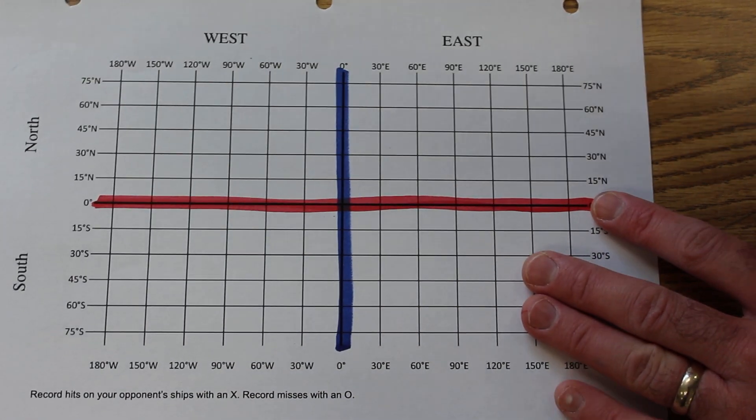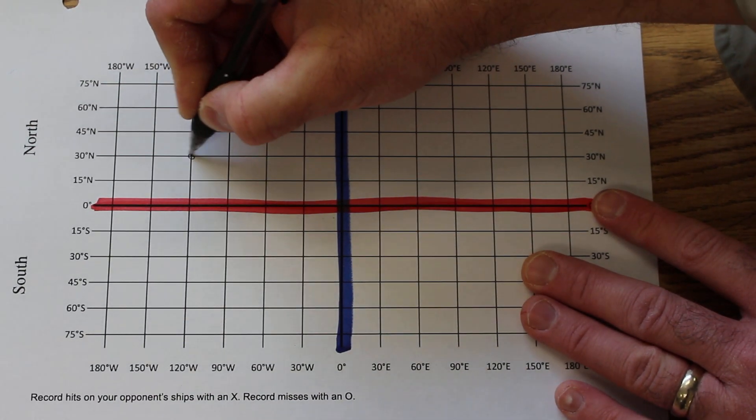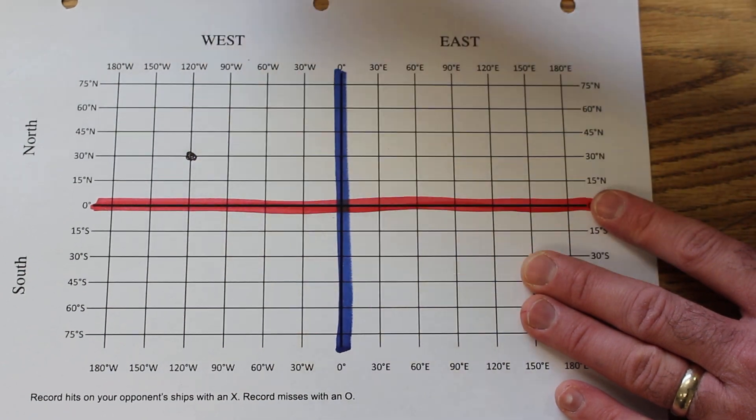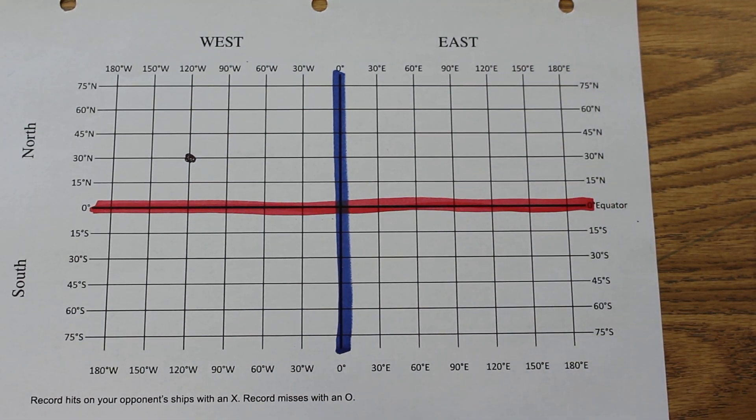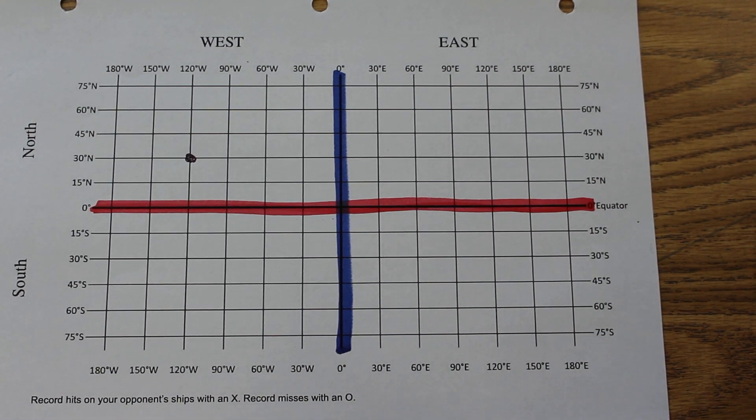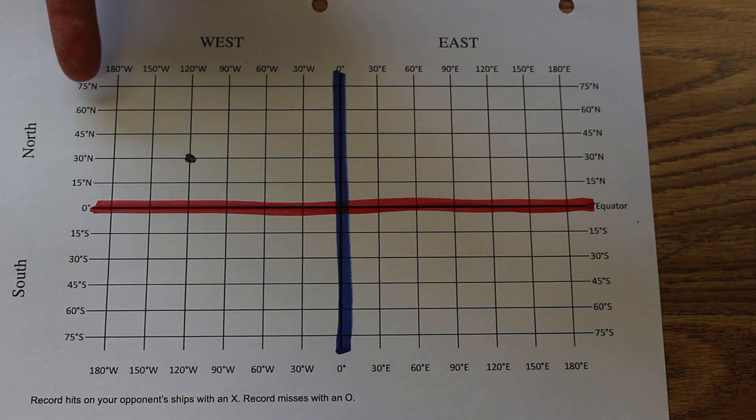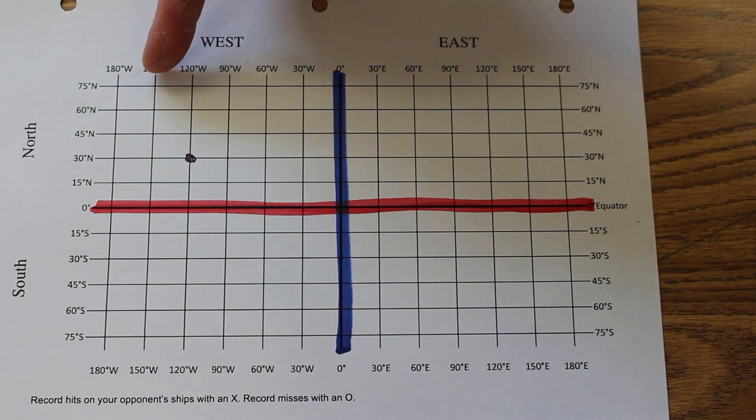If you are given a point and you're asked to find what the coordinate is of that point, you have to give the latitude and the longitude.